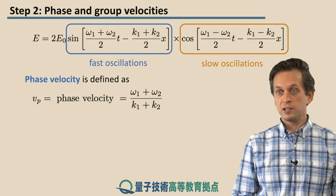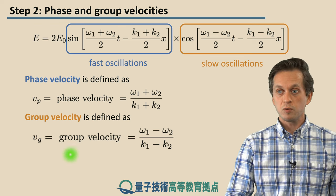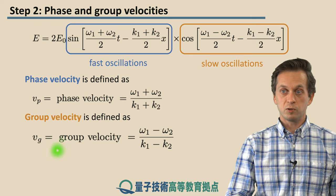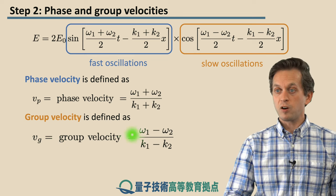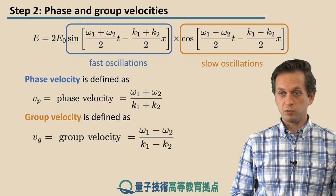And the group velocity is defined in a similar way, but for the slow oscillations. So vg, which we denote group velocity, is ω1 minus ω2 divided by k1 minus k2.